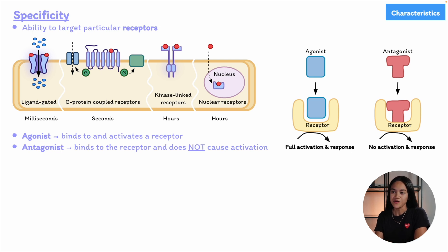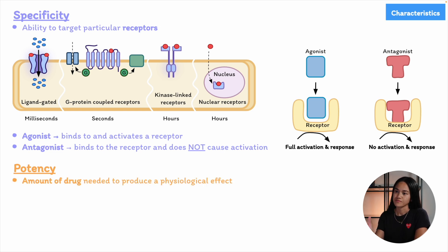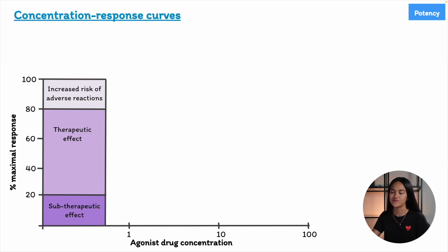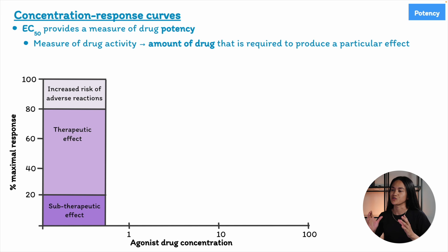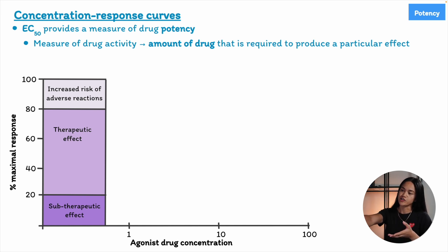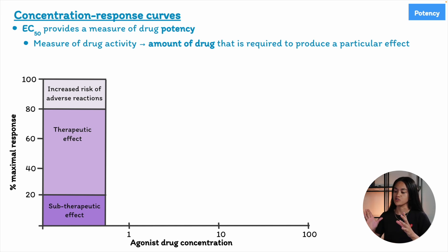Another important characteristic is potency. Potency refers to the amount of drug needed to produce a physiological effect, and it's measured by the EC50 value — the drug concentration required to achieve 50% of the maximum response. To understand potency better, we use concentration-response curves (CRCs), which show the relationship between a drug's concentration and its biological effects.